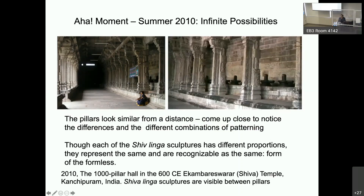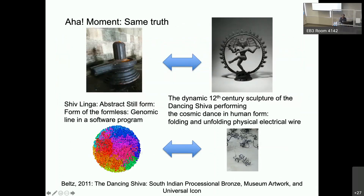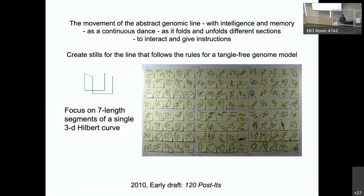Although each of the Shivalinga sculptures has different sizes and proportions, they represent the same and are recognizable as the same — the still form of the formless. The dancing Shiva on the right performs the cosmic dance in human form, and the Shivalinga sculptures approach the same truth. Could the abstract invisible genomic line existing in the software program that Erez and his team are working on not have the same relationship with the physical wire sculpture models that we are trying to create? If so, I could imagine an abstract invisible genomic line in a continuous dance — a line with its own intelligence and memory, continually moving through the cell while folding and unfolding sections to interact and give instructions to operate the machinery of the cell — and knowing when and where and how to fold and unfold, while still obeying the rules for a tangle-free genome model.